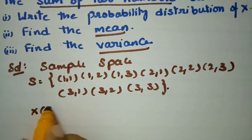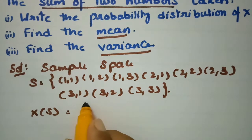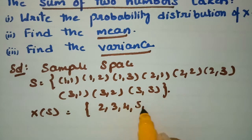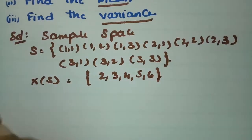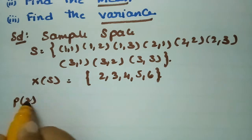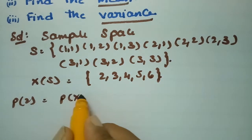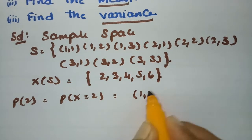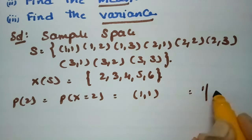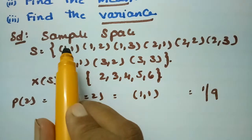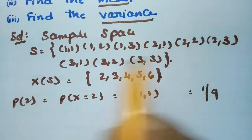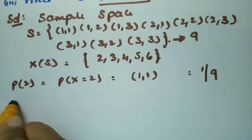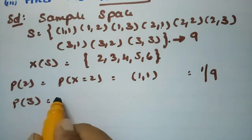X(s) gives the sum of the two numbers, so the possible values of X are 2, 3, 4, 5, and 6. The probability of getting a sum of 2 — P(X=2) — has only one chance, which is (1,1), giving 1 out of 9 total possibilities.